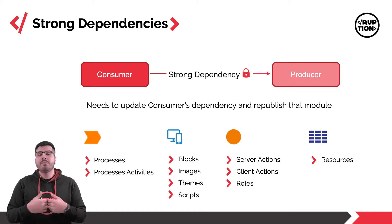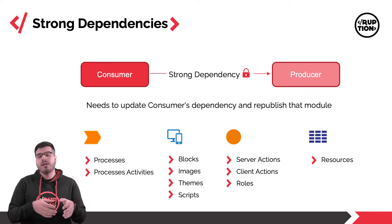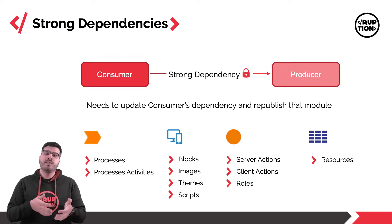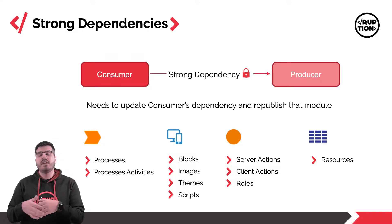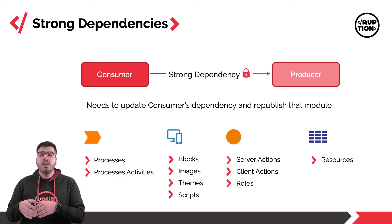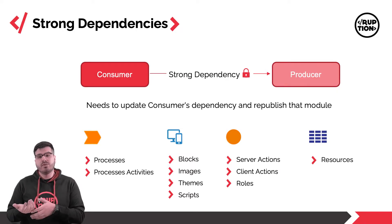The elements that originate this type of dependency are on the Processes tab: the Processes and the Process Activities. On the Interface tab: Blocks, Images, Themes and Scripts. On the Logic tab: Server Actions, Client Actions and Roles. And on the Data tab: Resources.